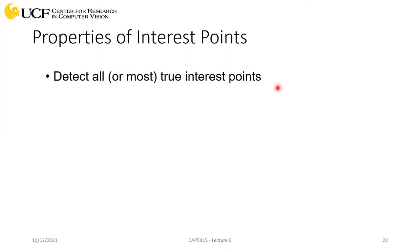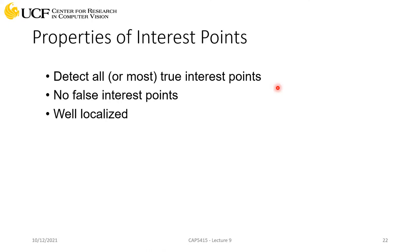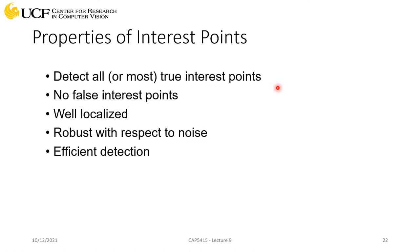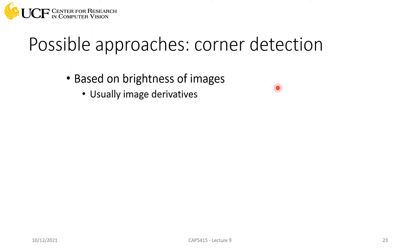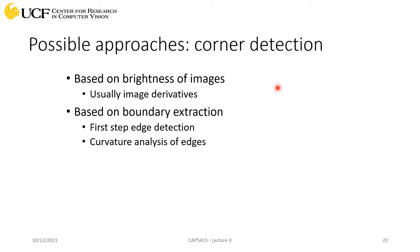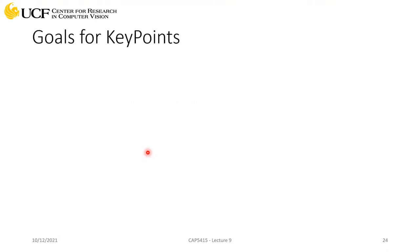When extracting interest points, we want to detect all true interest points without detecting false ones — similar to desired properties for edge detection. They should be well-localized, robust to noise, and detected efficiently. One interesting approach for detecting interest points is corner detection. The first algorithm we'll cover is the Harris Corner Detector, which is based on the brightness of the image using image derivatives. We can also use boundary-based approaches like step edge detection or curvature analysis.